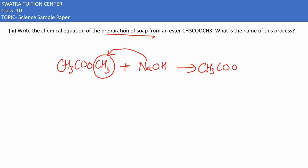So what is the soap molecule? CH3COONa. And then what is left? CH3 would get attached with OH, forming CH3OH.